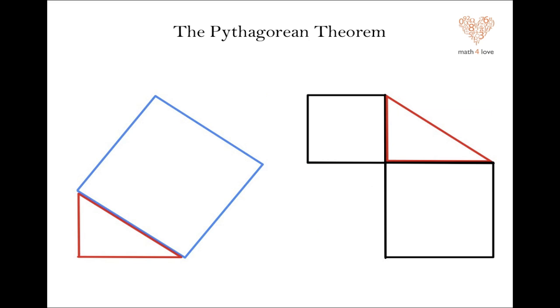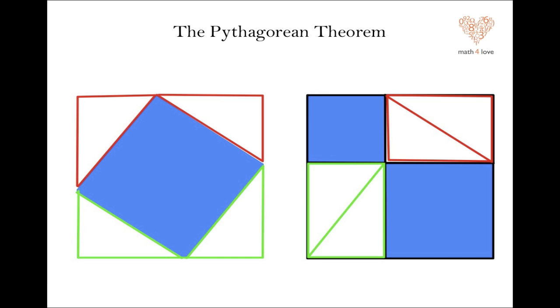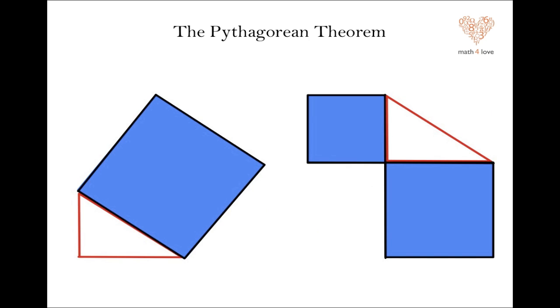In fact, all that matters is what those two squares built off of the smaller sides of the right triangle are. Those two together have to add up to the blue square. Why? Well, add those four triangles back in and you get the same thing. So when you take them away, you should have the same thing on either picture also.